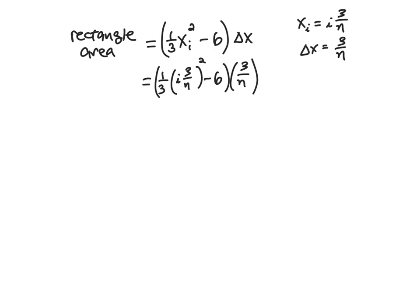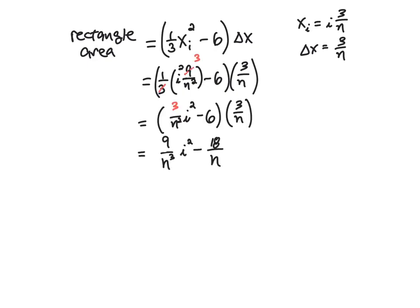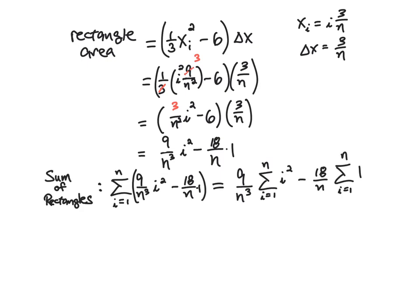Substituting xᵢ = 3i/n and Δx = 3/n: we get [⅓·(3i/n)² − 6]·(3/n). Squaring gives 9i²/n², and the ⅓ out front reduces that to 3i²/n². Distributing 3/n we get 9i²/n³ minus 18/n. So the area of each rectangle is 9i²/n³ − 18/n·1.